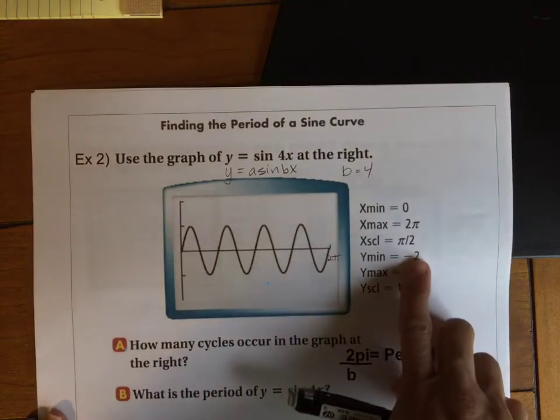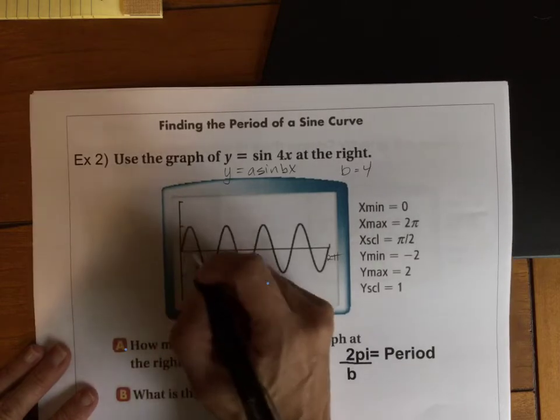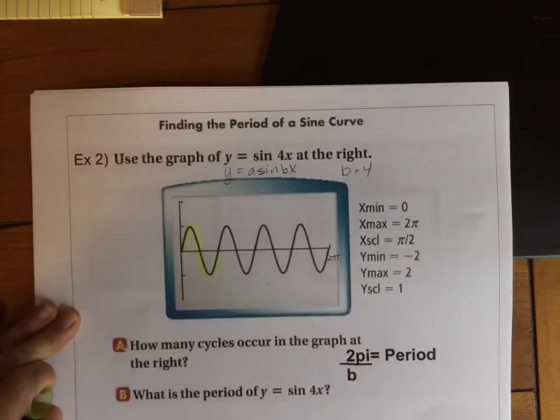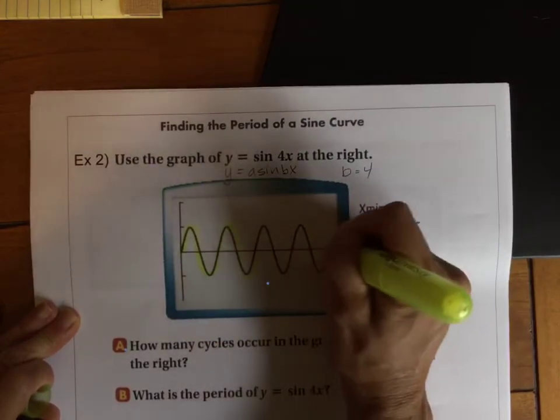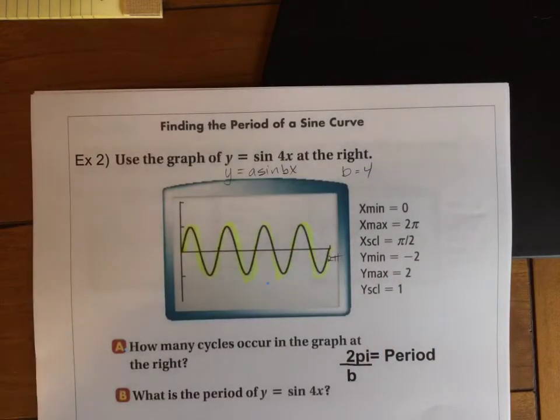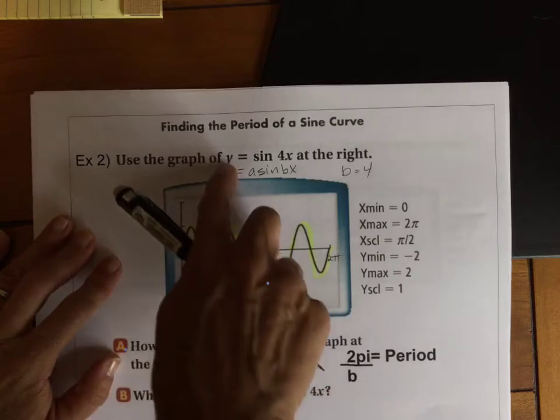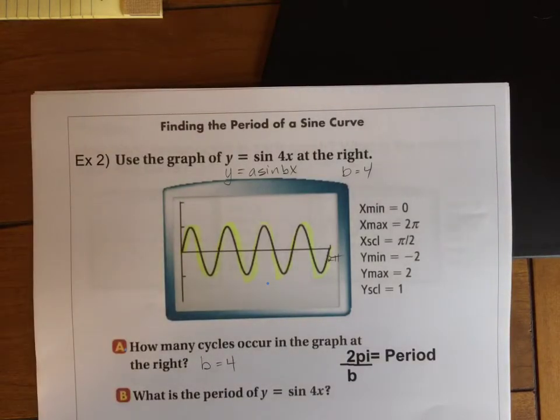It says that our minimum and maximum for y is negative 2 and 2. So we have an amplitude of just 1, which we see up there. And then it says how many cycles occur in the graph at the right. So we can just count. Here's 1, 2, 3, 4. Notice how that number matches with the 4 up there. So if you did not have the equation, you could figure out that B was 4. If you only had the equation, you would also know that B was 4.